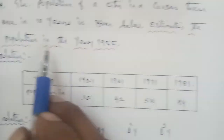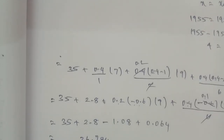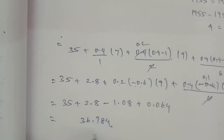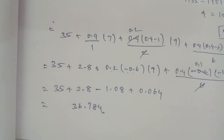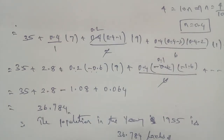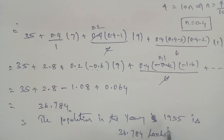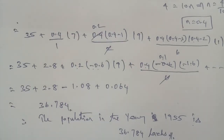Therefore, the estimated population in the year 1955 is 36.784 lakhs. So the population of the city in 1955 is approximately 36.784 lakhs. Thank you.